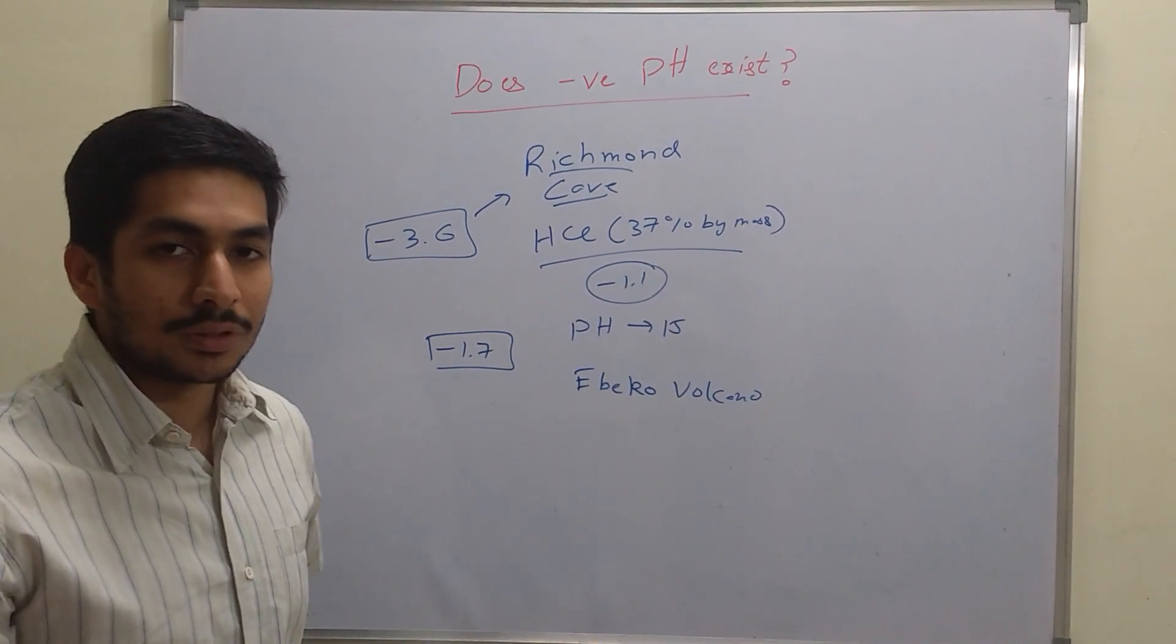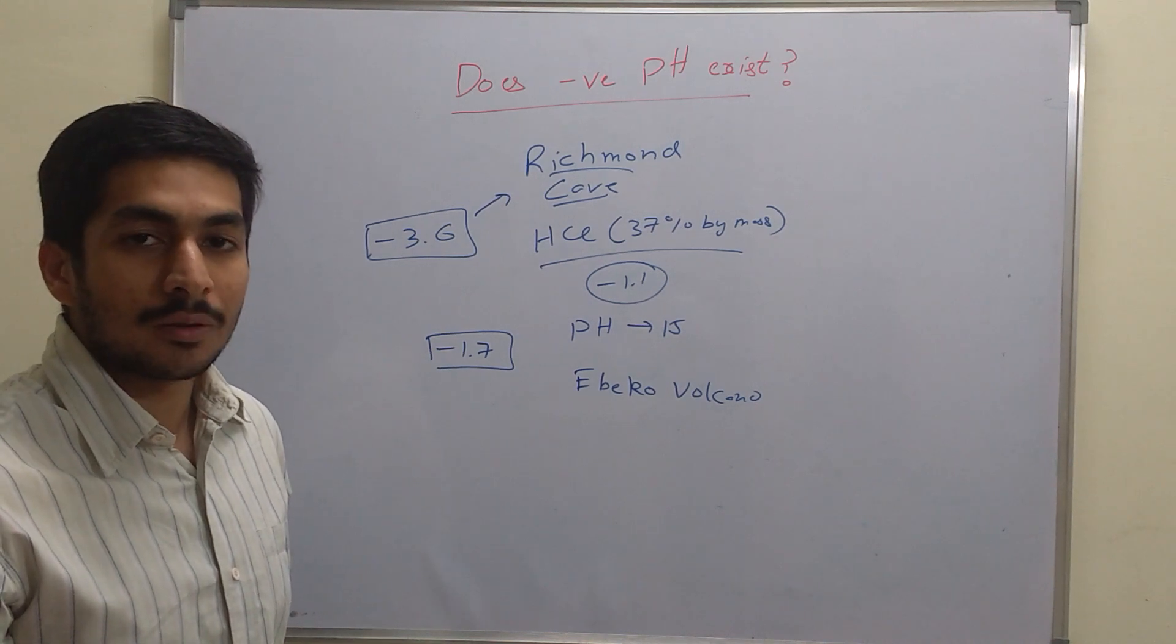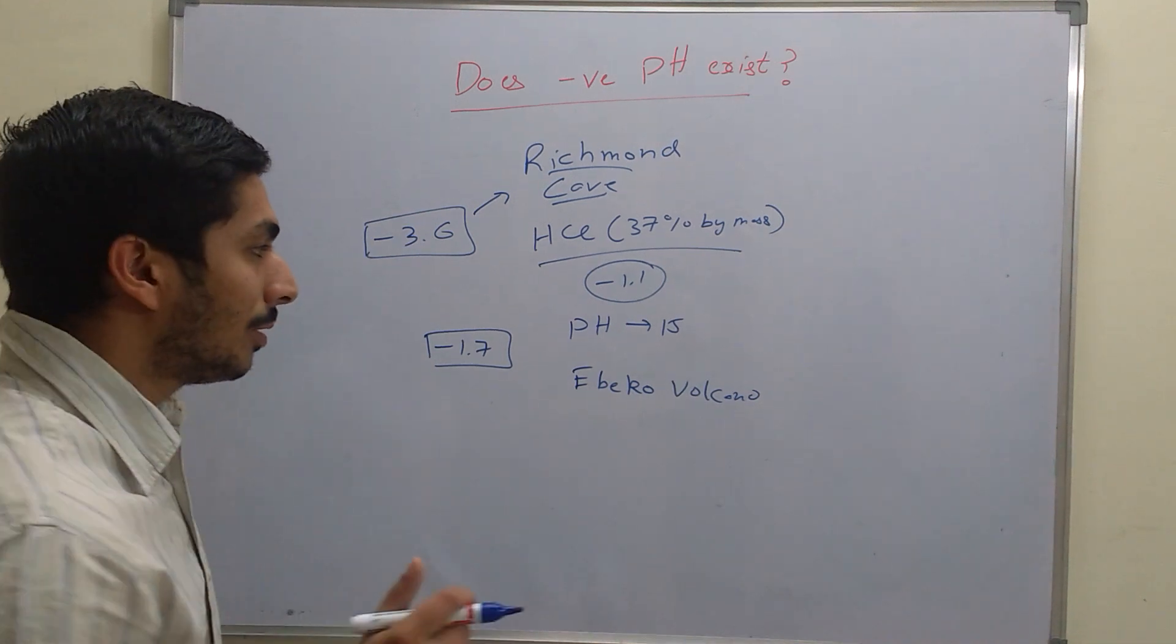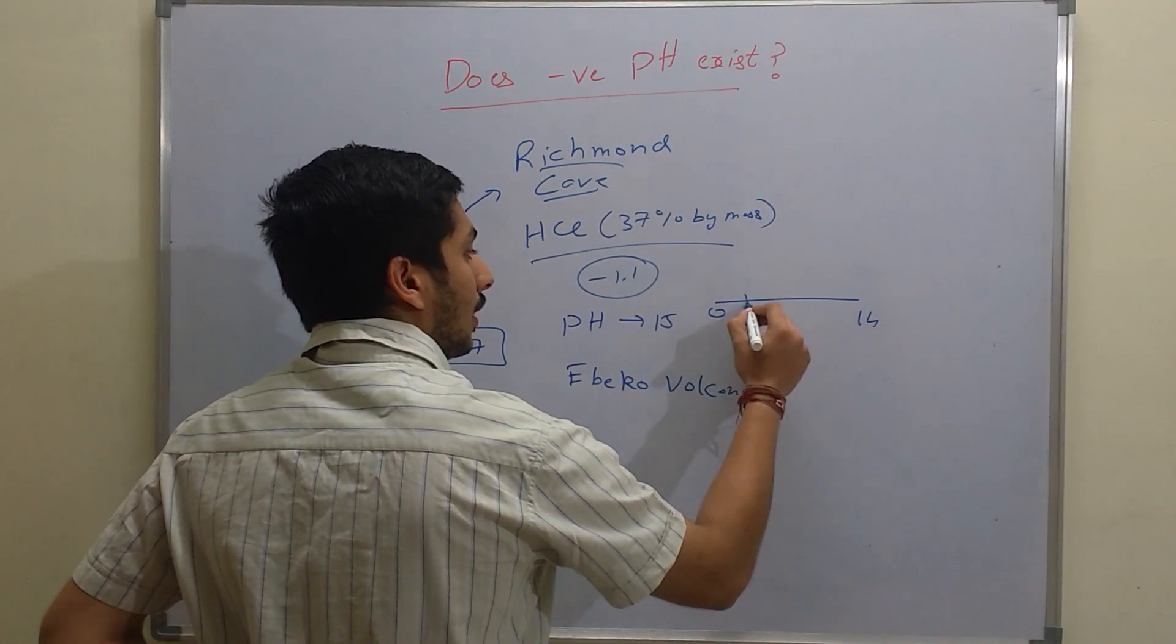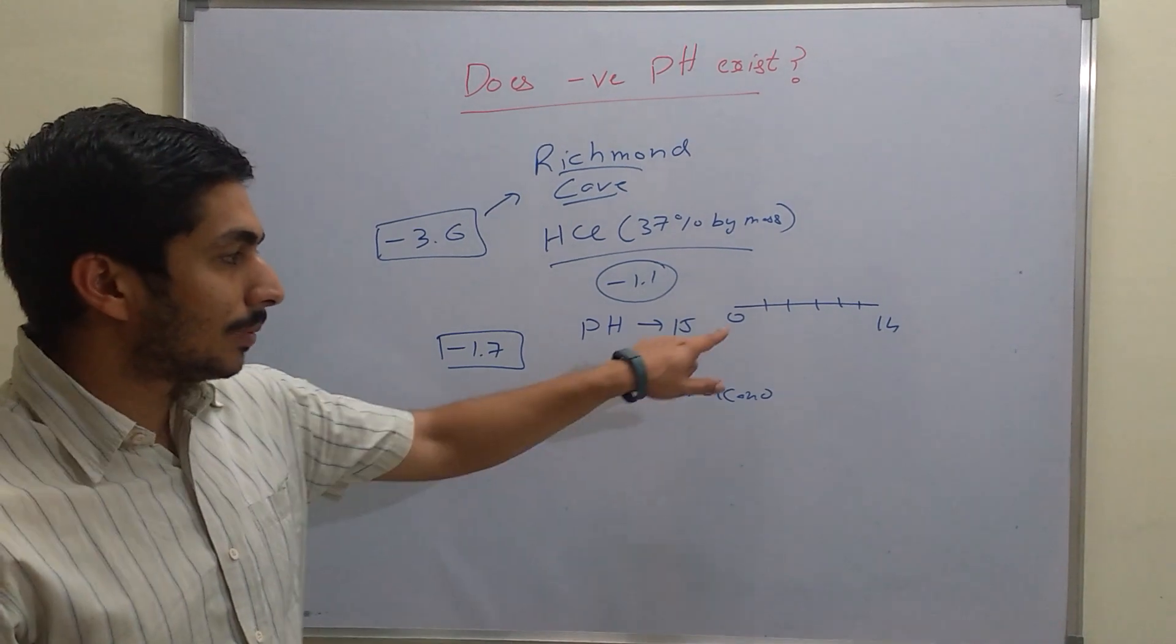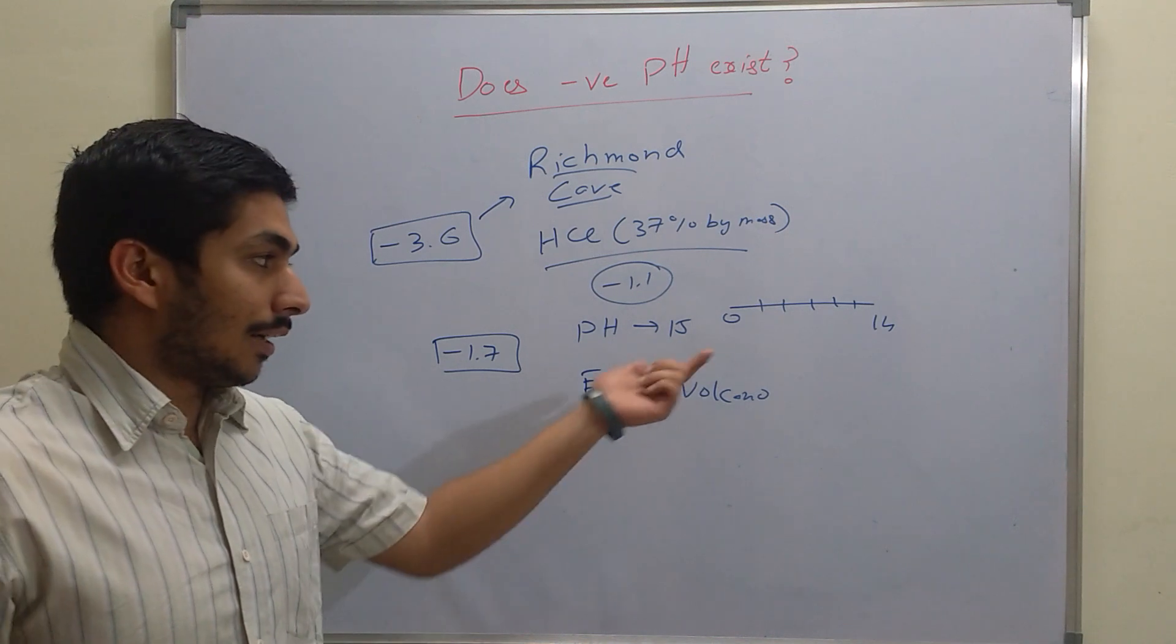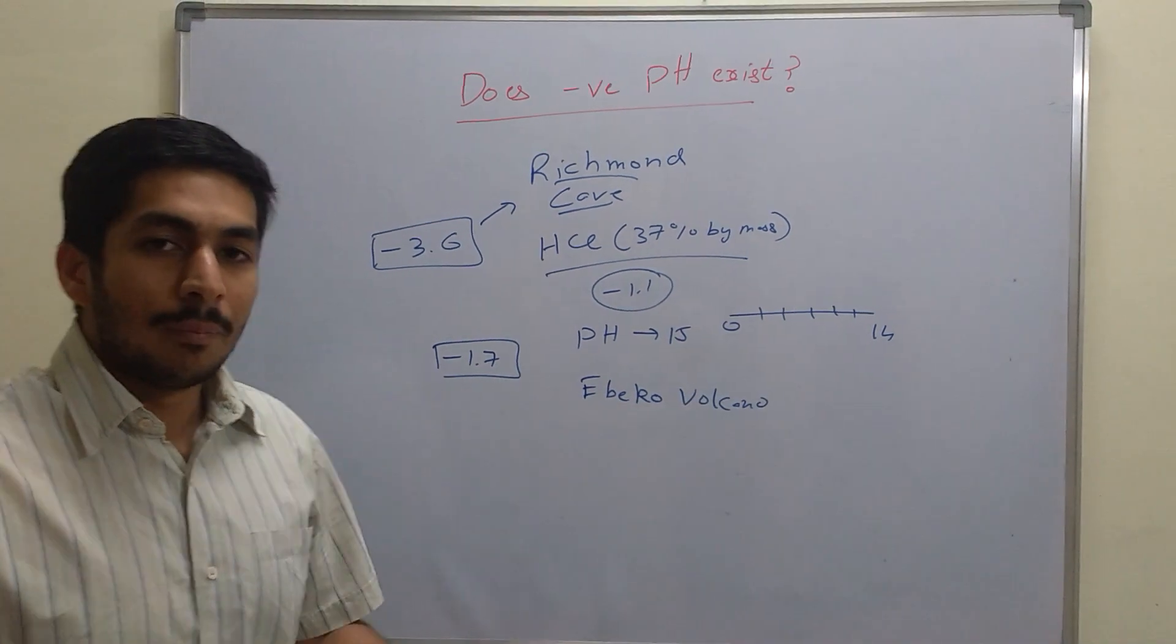It is actually very surprising that standard textbooks show the pH scale as a closed-ended scale. What do I mean by closed-ended scale? They show this range from 0 to 14 with values in between. This is a closed-ended scale because it tells you that pH ranges only from 0 to 14.